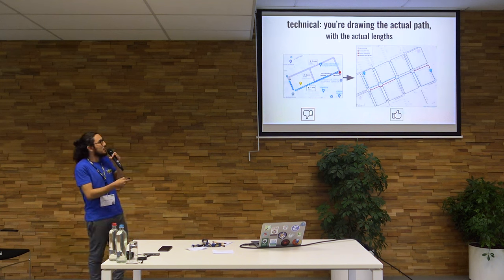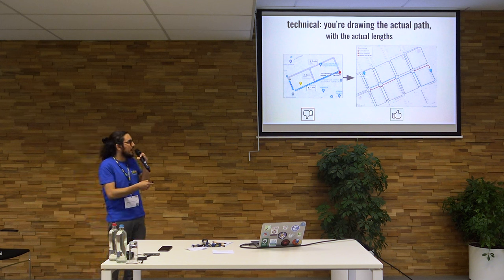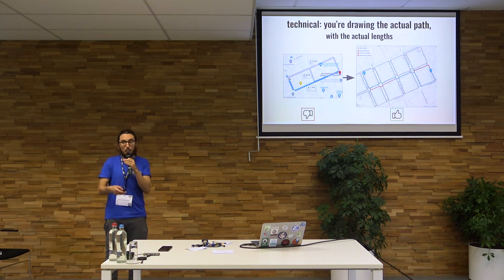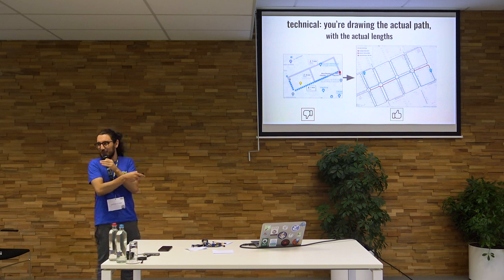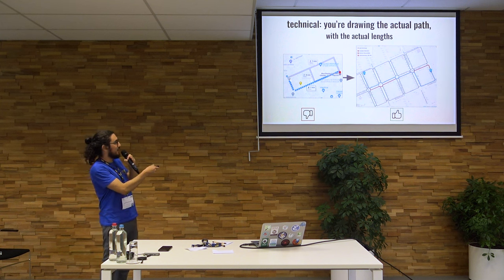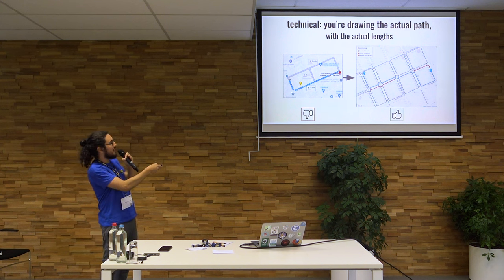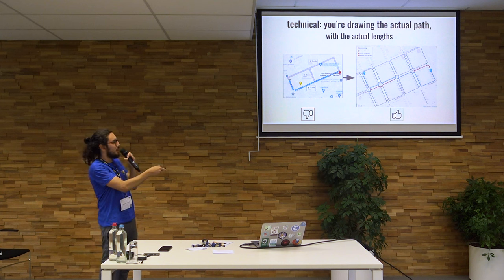The first thing is you're drawing the actual path with the actual length, so you are representing where the sidewalks really are, and you are mapping the crossings in the way that represents how pedestrians actually move around. You have the actual path with the actual length, different from bad routers. We pedestrians don't walk in the middle of the streets — we don't walk on the street intersections, we walk on the crossings.